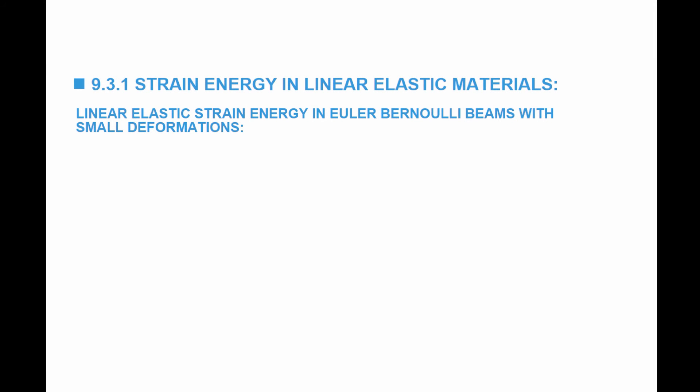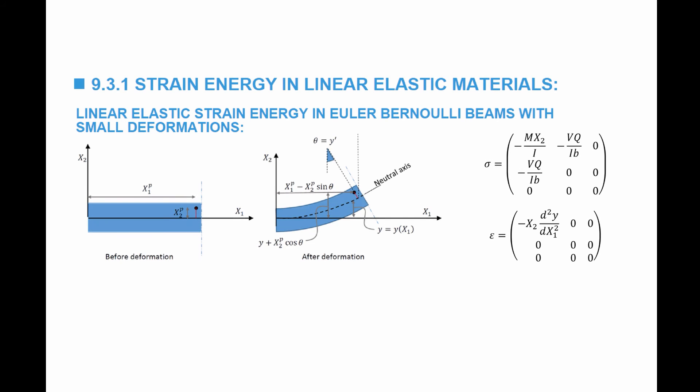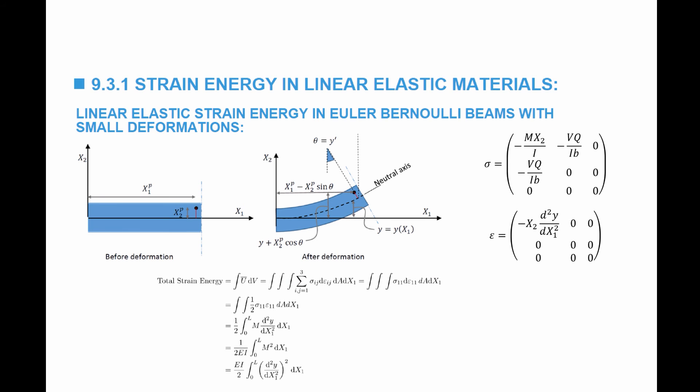Next, we calculate the strain energy in an Euler-Bernoulli beam with small deformations. In an Euler-Bernoulli beam, we ignore all strains except ε₁₁. The normal stress σ₁₁ equals negative Mx₂ over I, and there are also some shear stresses. The strain energy equals half σ₁₁ε₁₁, since all other strain components are zero, leaving only the σ₁₁ε₁₁ term in the energy expression.